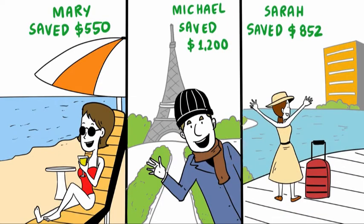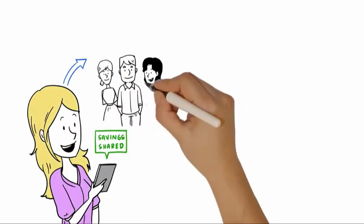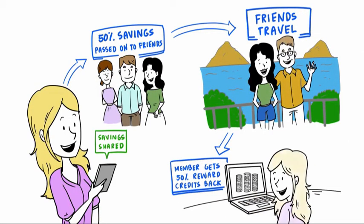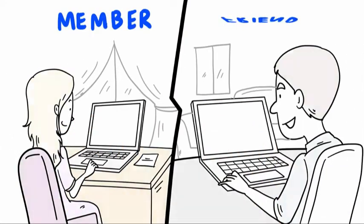When you share your savings with Boomerang Rewards, friends receive 50% of your savings. When your friends travel, you receive the remaining 50% back in reward credits.